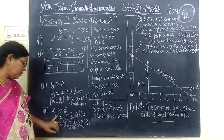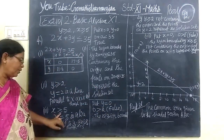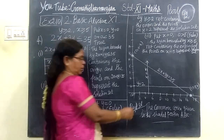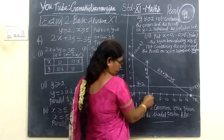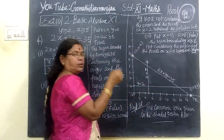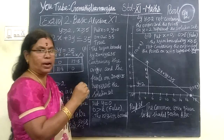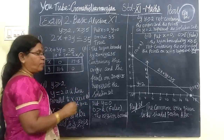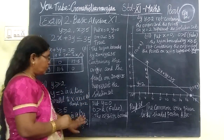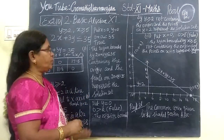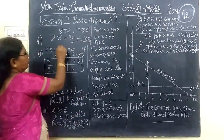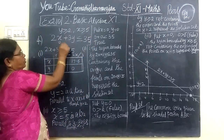Then Y greater than 5 means there is a line parallel to the X axis at a distance of 5.